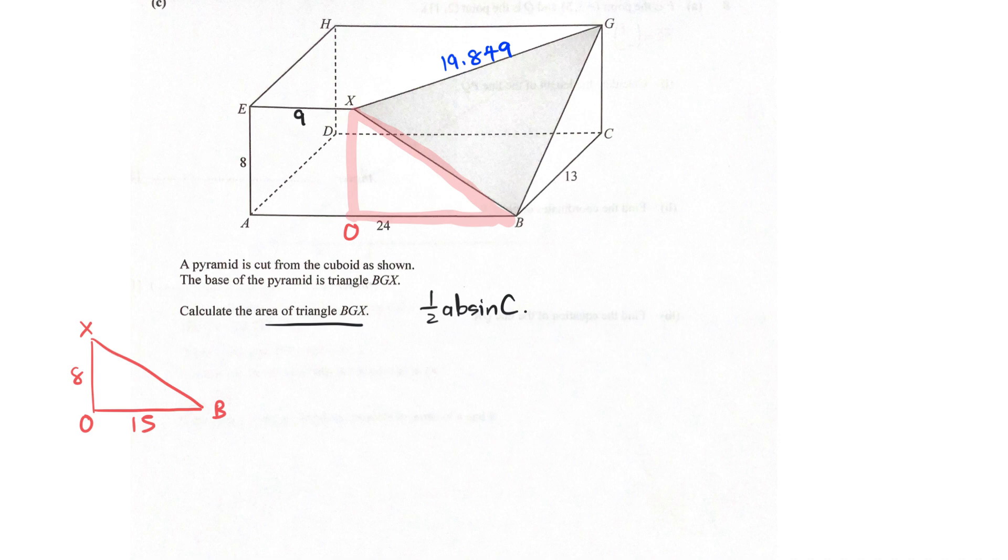So, again, Pythagorean theorem. This is a right angled triangle. So, XB squared is 8 squared plus 15 squared. So, very quickly, XB is simply 17 cm. So, 17 here. Fill it in.